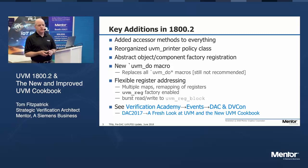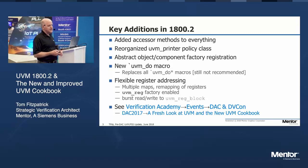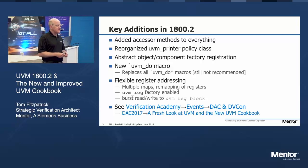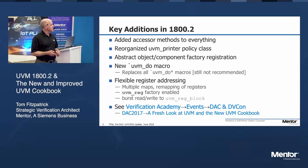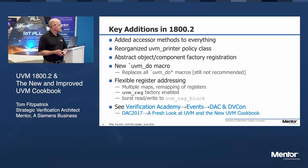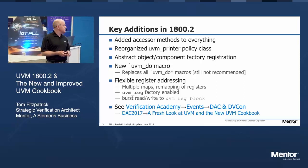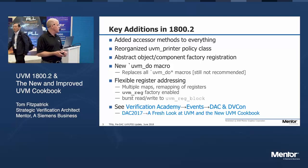Some key additions in 1800.2 since UVM 1.2: we've added accessor methods to everything — this is standard object-oriented programming practice, though they may have taken it a bit to an extreme. We reorganized the UVM printer policy class, added object and component factory registration, and there's a new uvm_do macro. We've gotten rid of all the dozen or so different flavors of uvm_do macros — now there's just one.